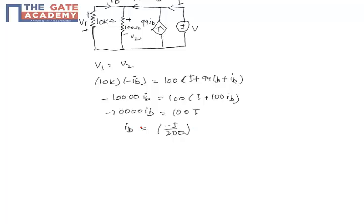Now the first step is to determine a relationship between the current I and this Ib. In the second step what we will do is we will determine a relationship between this voltage and Ib, and hence we can use both these relationships to determine the relationship between V and I, which gives us the impedance.